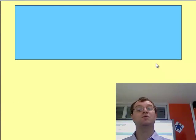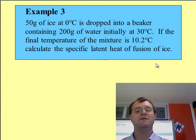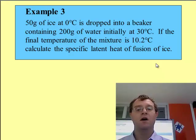Here's a question which captures that idea. 50 grams of ice at zero degrees centigrade is dropped into a beaker containing 200 grams of water initially at 30 degrees, but the temperature drops down to 10.2 degrees centigrade. All that information is given. We need to extract what we're looking for. The final temperature of the mixture is 10.2 degrees centigrade, so that means when the ice is completely melted.